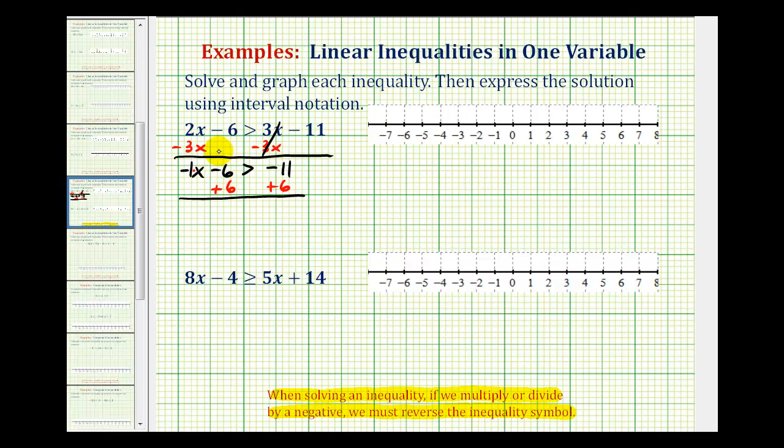So we have negative 1x, this would be zero, is greater than, negative 11 plus 6 is negative 5. And now to undo this multiplication, we'll divide both sides by a negative 1. And since we're dividing by a negative, we do have to reverse the inequality symbol.